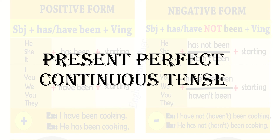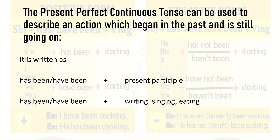Hello children. In the previous lesson you learned about the present tense, and therein you learned about the present simple, the present continuous tense, and the present perfect tense. Today we are going to deal with the last of the present tenses: the present perfect continuous tense.